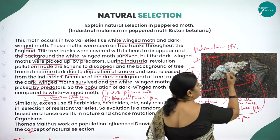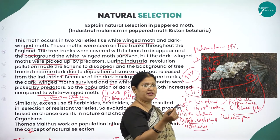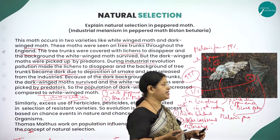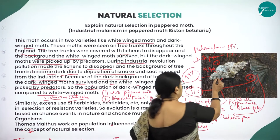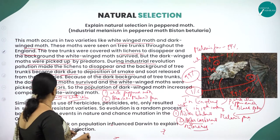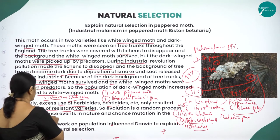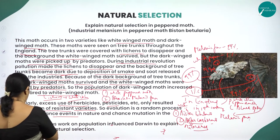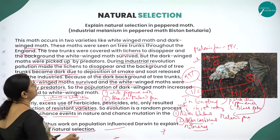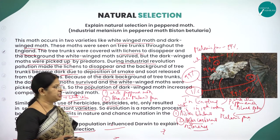Before the industrial revolution, white forms were 99 percent dominant and the dark forms were 1 percent because white moths could not be easily identified by predator birds. But after the industrial revolution, this became reversed: white forms became 1 percent and dark forms became 99 percent. Similarly, excess use of herbicides and pesticides resulted in the selection of resistant varieties. Evolution is a random process based on chance events in nature and chance mutation in the organism. Thomas Malthus worked on population and influenced Darwin to explain the concept of natural selection.